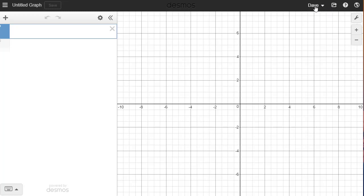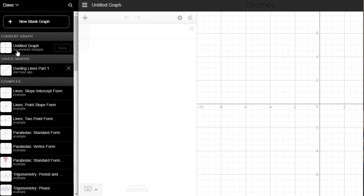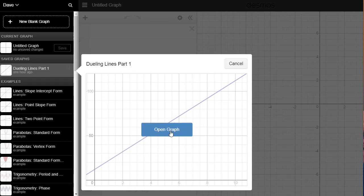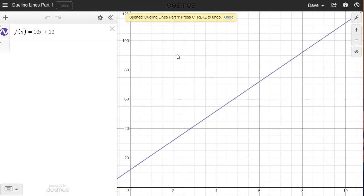So you can see up here it says Dave so I know I'm logged in. I'm going to go over here to the little hamburger you see, click on it and you'll see right here it says dueling lines part one. That's the one that I saved before. If I select it I can go ahead and continue working on this graph from where I was before.